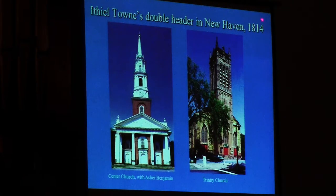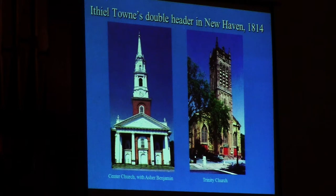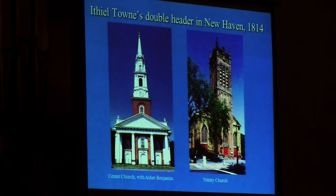This is that same architect in 1814, 30 years earlier, acting as clerk of the works for the classical architect Asher Benjamin on the New Haven Green, building a classical church. And commissioned by the Episcopalians next door, on the same New Haven Green, in the same summer of 1814, to build the latest thing in church architecture, which is Gothic. So you have Gothic and classical going head-to-head between the two major denominations in New England, the Episcopalians versus the Congregationalists.